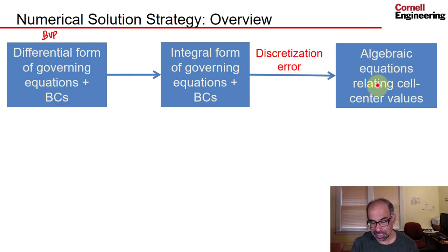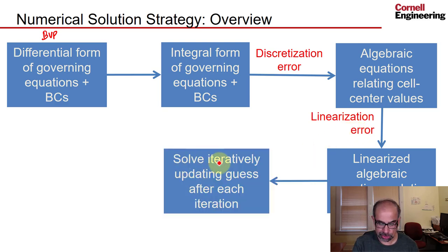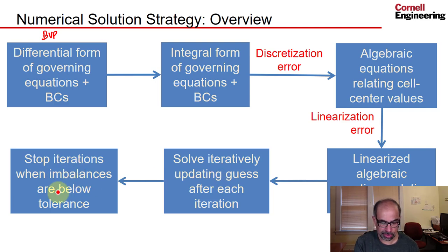Now, an additional complication is that the algebraic equations are nonlinear, so they have to be solved iteratively through linearization. So you derive linearized algebraic equations relating cell center values, and the linearization happens around the guess value. And in the process, you introduce a linearization error, which you minimize through iteration. So you solve iteratively, updating the guess after each solution, and if everything works well, the guess will progressively go to the exact solution of the algebraic equations. And the way you assess if you have iterative convergence is you look at the imbalances of mass and momentum for each control volume, and then you add that all up. So when those imbalances, the mass and momentum imbalances are below a tolerance, you will stop the iterations. You'll never get to zero imbalances, which would be the exact solution to the algebraic equations.